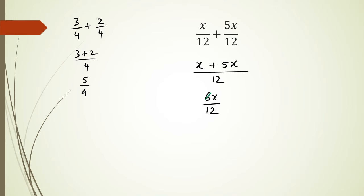So 6 divided by 6 is 1 and 12 divided by 6 is 2, which means my final answer for this question is x over 2. Okay, let's look at another example.